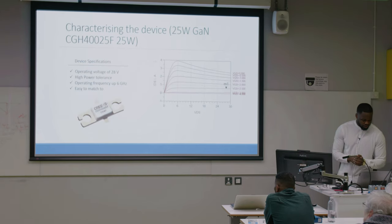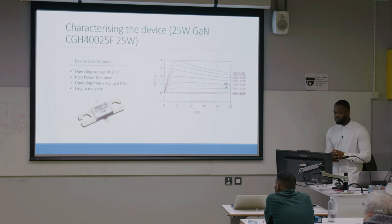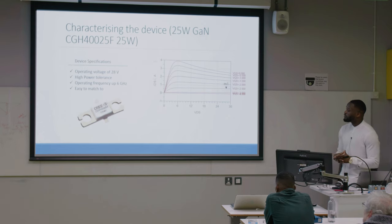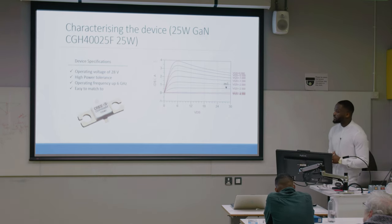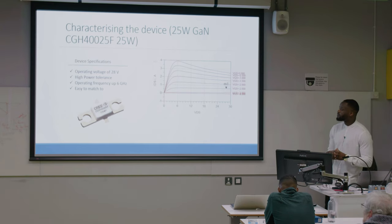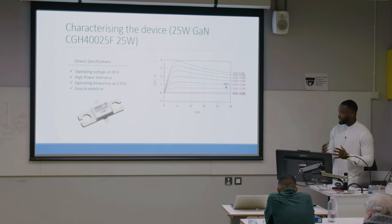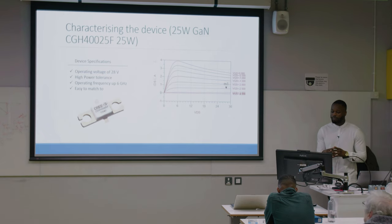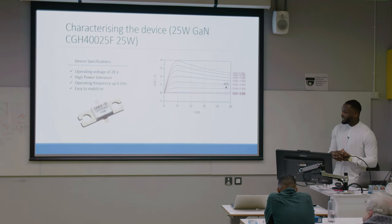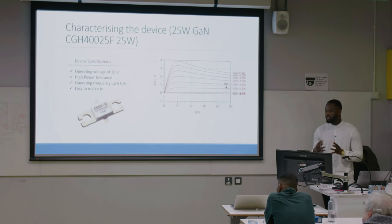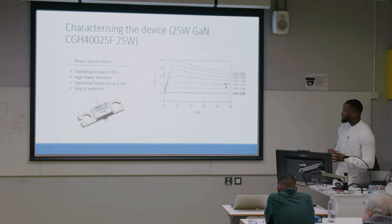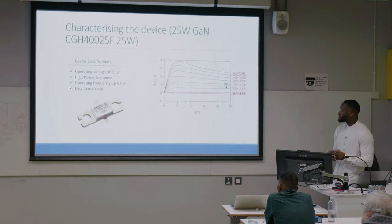Moving on to my project — the first thing was choosing the device. I chose the 25 watt GaN transistor because it meets the design requirements. It has an operating voltage of 28 volts, really high power tolerance, an operating frequency up to 6 gigahertz, and it's easy to match because it has high input and output impedance. This graph shows the DC simulation I did in ADS to show the operation of the device.